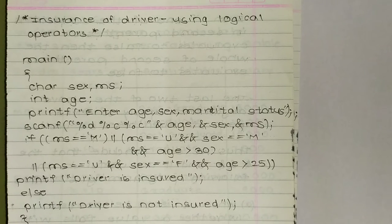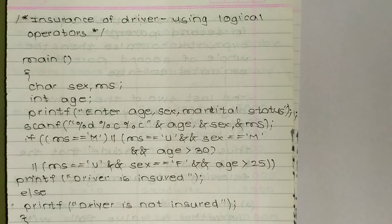Now scanf %d %c %c, so we are scanning those things. %d is for integer, %c is for character. Now if - here the logical statement part is starting. Now if ms is equal to M, that means it is a comparison, it is an equality operator.